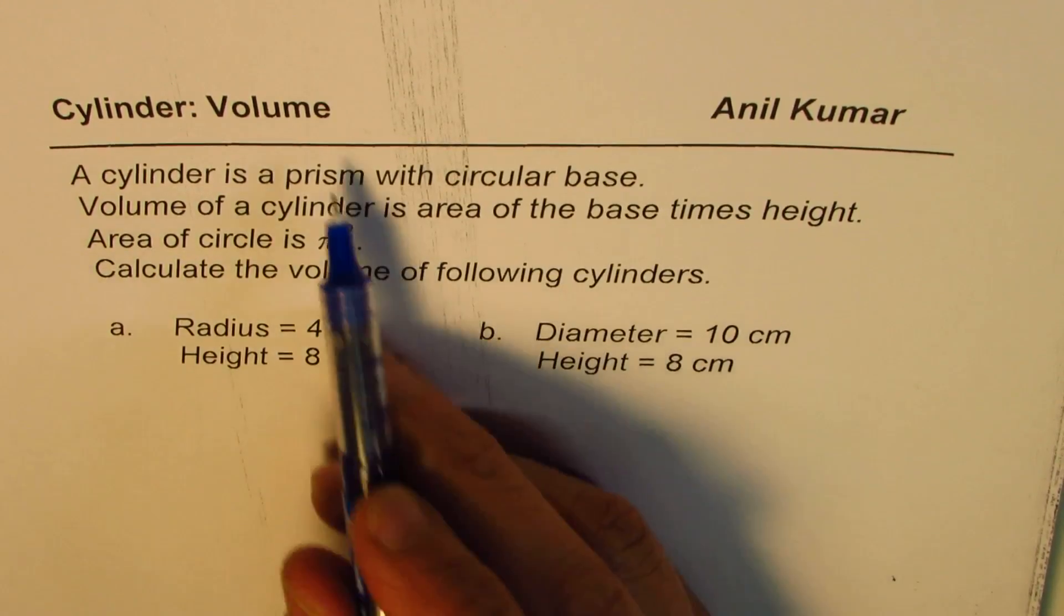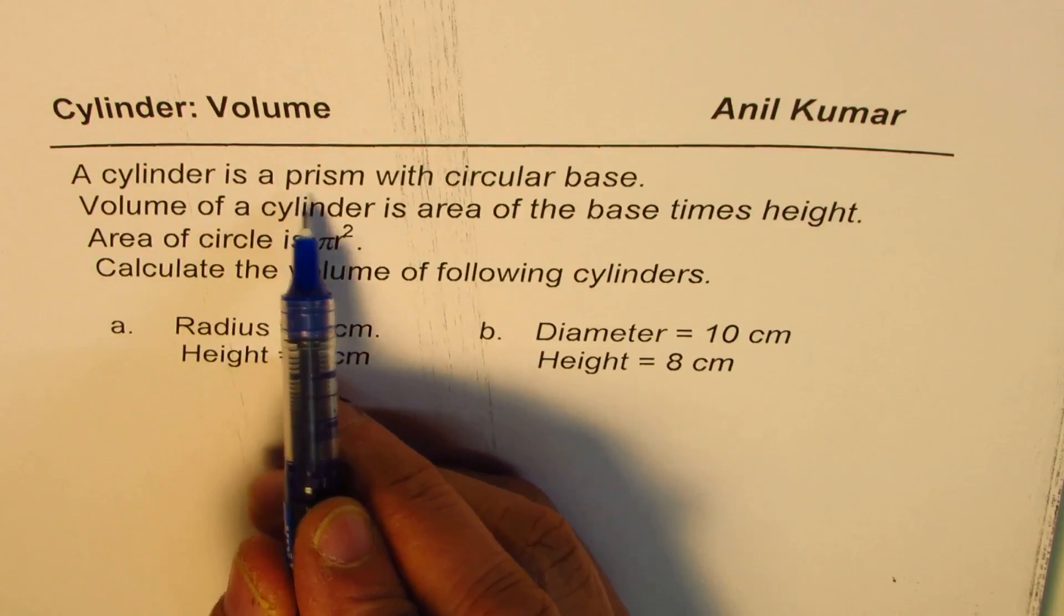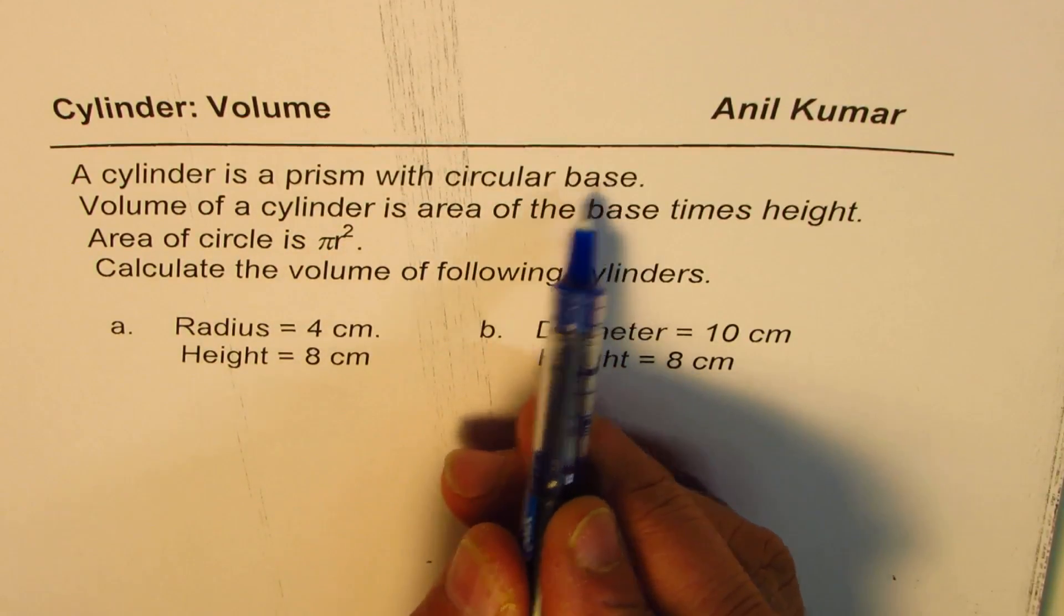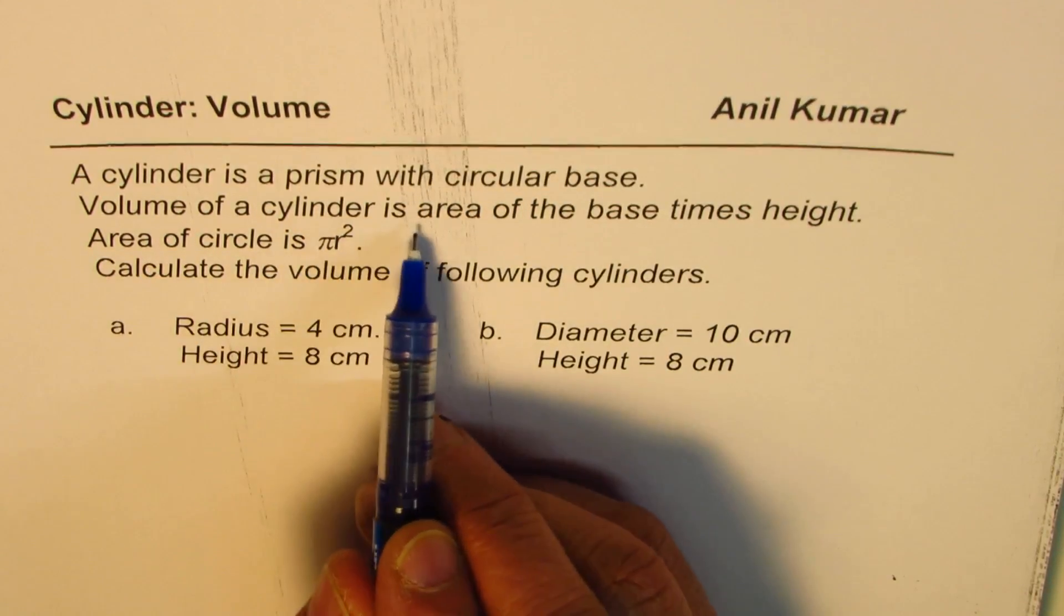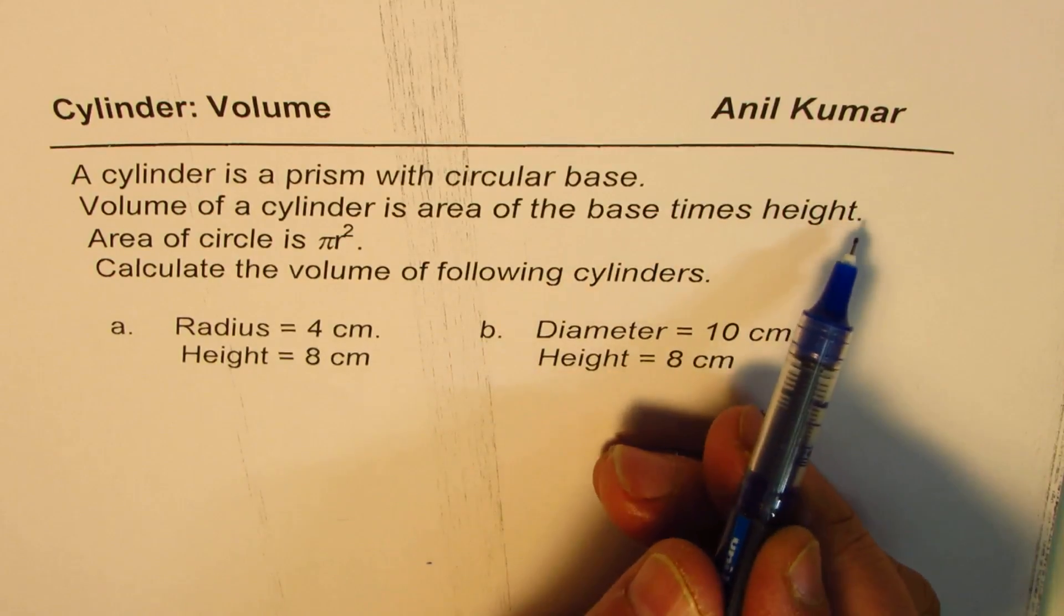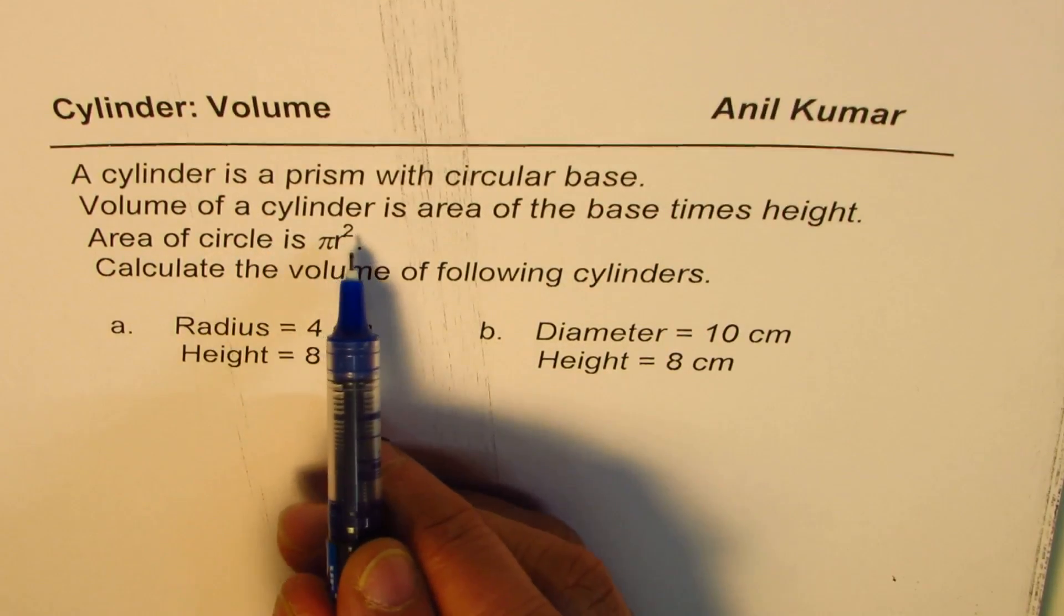Here is some information about cylinder. A cylinder is a prism with circular base. Volume of the cylinder is area of the base times height. Area of the circle is pi r squared.